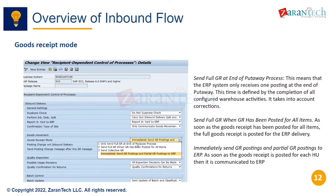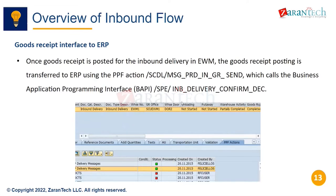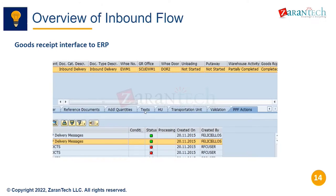The drawback of sending the full GR only at end of put away is that if there are problematic pallets, stocks aren't available even though a good percentage have been placed. Otherwise it sends one GR. Keep in mind ECC and EWM are not in sync because the GR posting is not reflected. The PPF is the one sending the GR, and there are technical things like which PPF and which BAPI is being called.